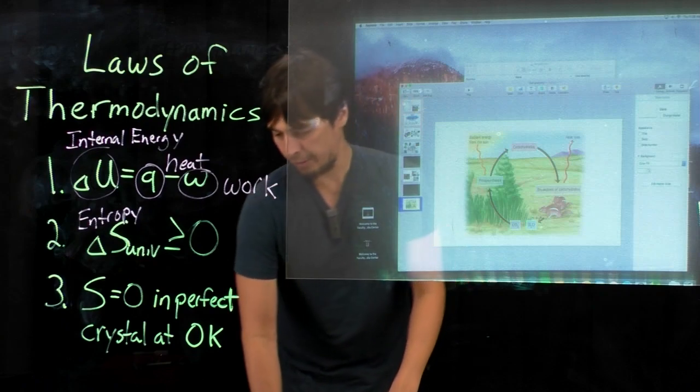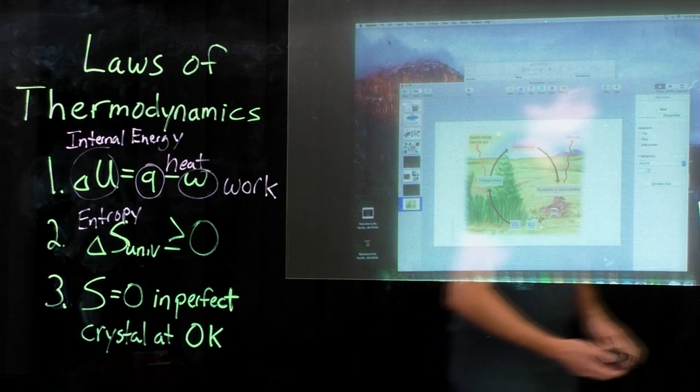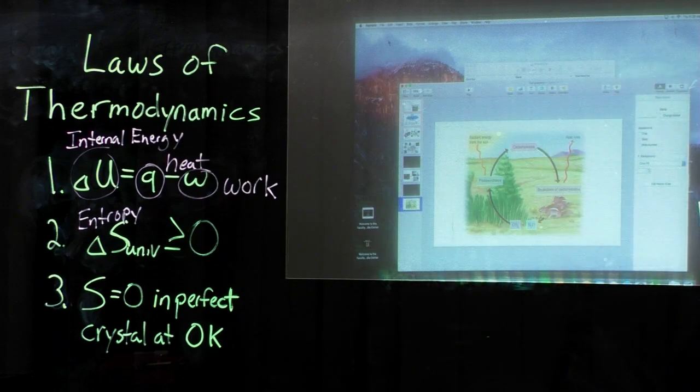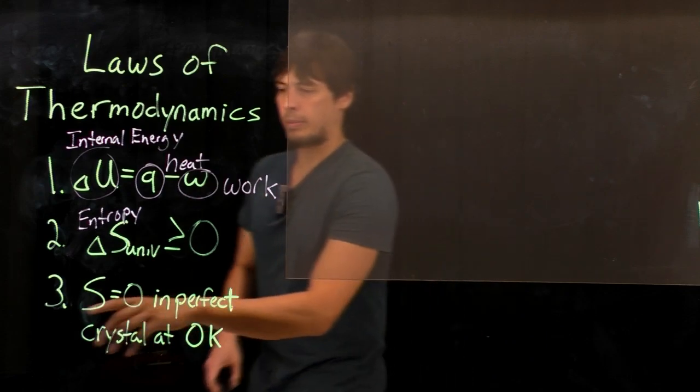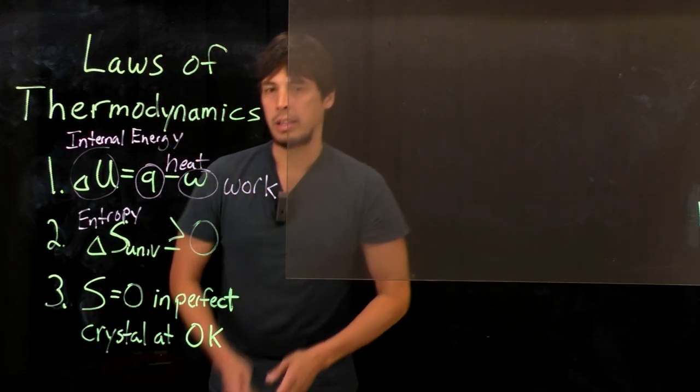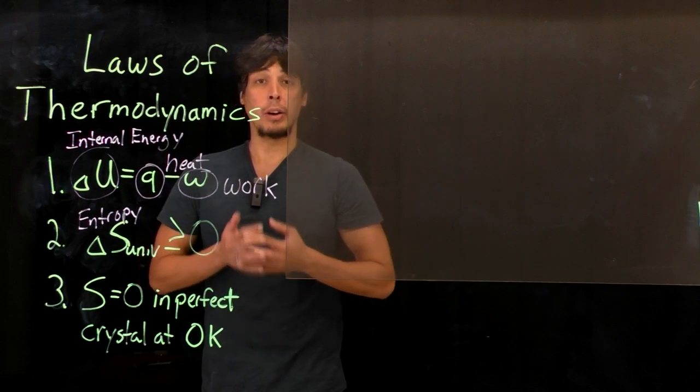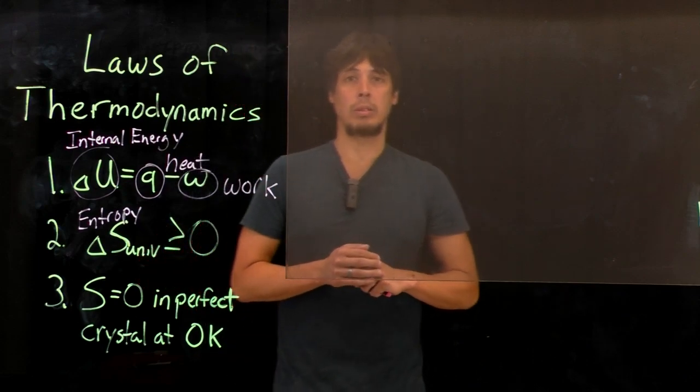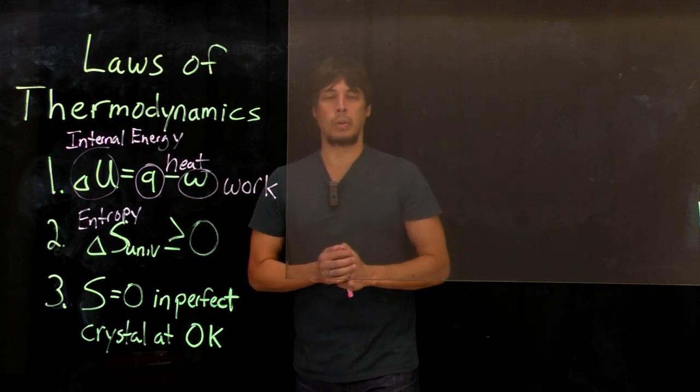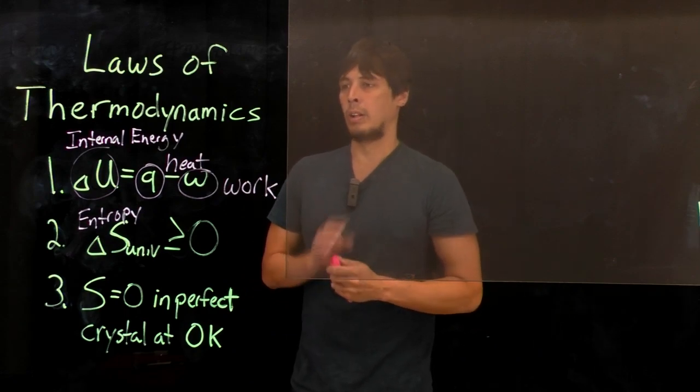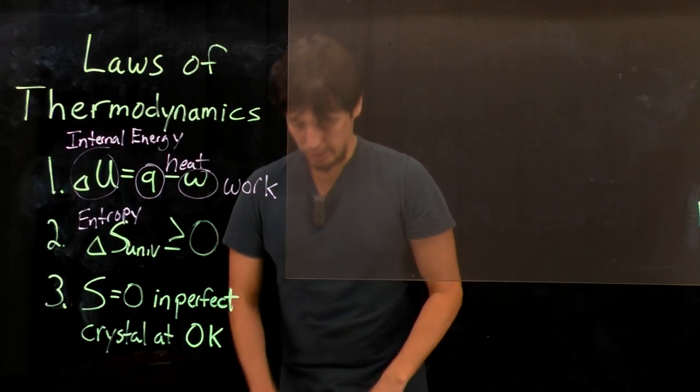So the final equation is shown here, number three, which says that entropy is zero only in a perfect crystal at zero K. In biochemical systems, of course, zero K is minus 273 degrees Celsius. We're not doing much work around there. So most of what we'll look at is related to these two equations here.